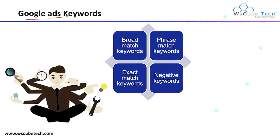Next we have Google Ads keywords. Google Ads keywords are the keywords which focus on creating advertisements. We have some types of keywords here: Broad Match, Phrase Match, Exact Match, and Negative Match. Based on these, you decide which type of people your ad will be shown to — those entering a broad match keyword, a phrase match, or your exact search term in a Google Ad search campaign.